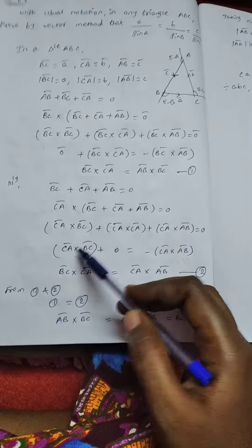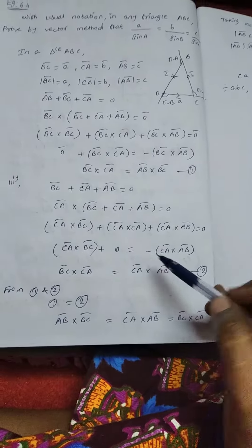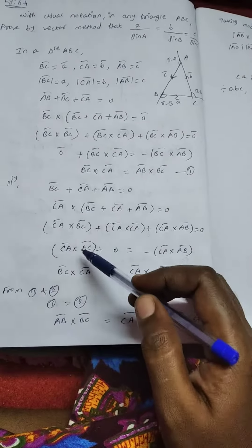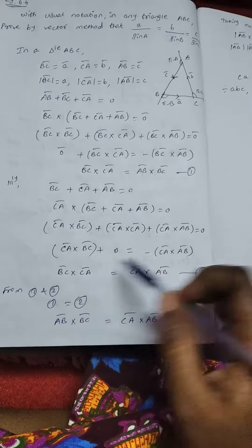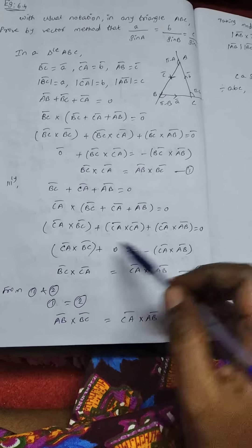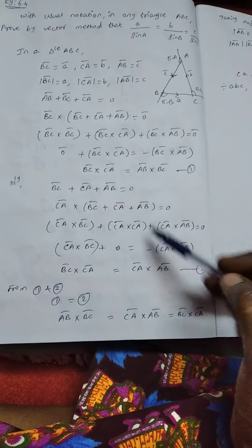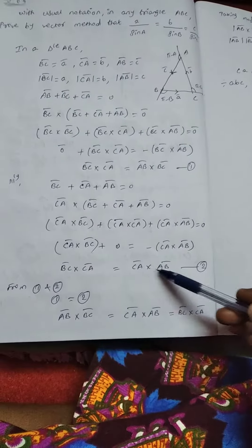And the value is 0, this is minus. This is BC cross CA, CA cross BC, this is minus. This is BC cross CA, BC cross BC, CA cross AB. This is the LHS, this is a modulus.